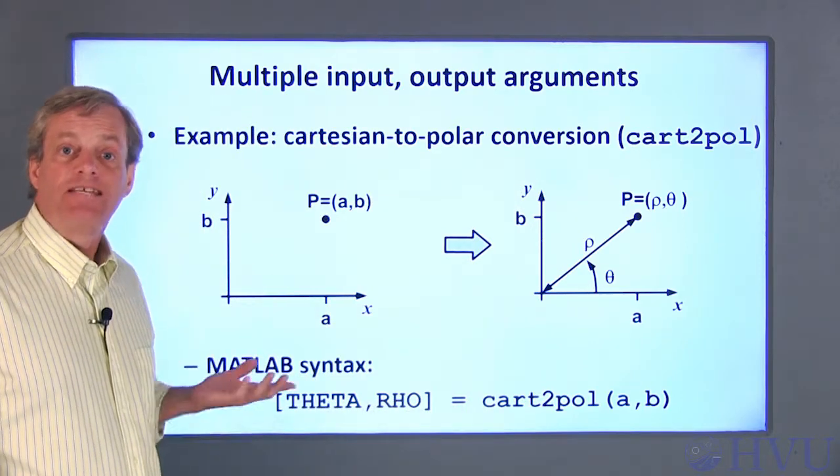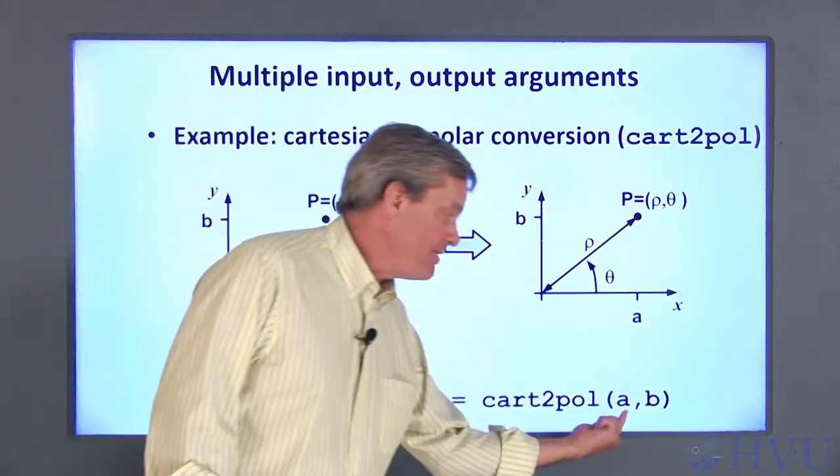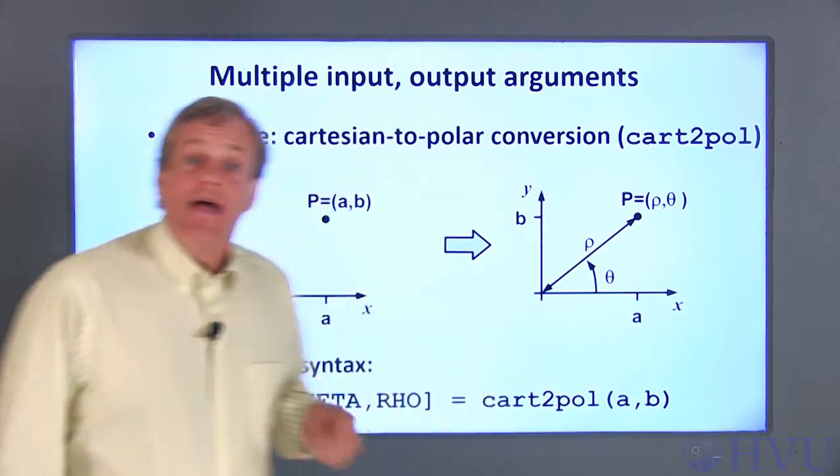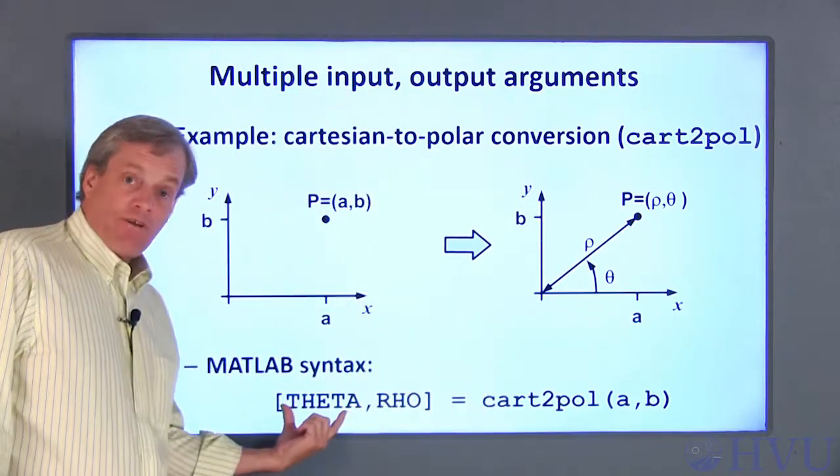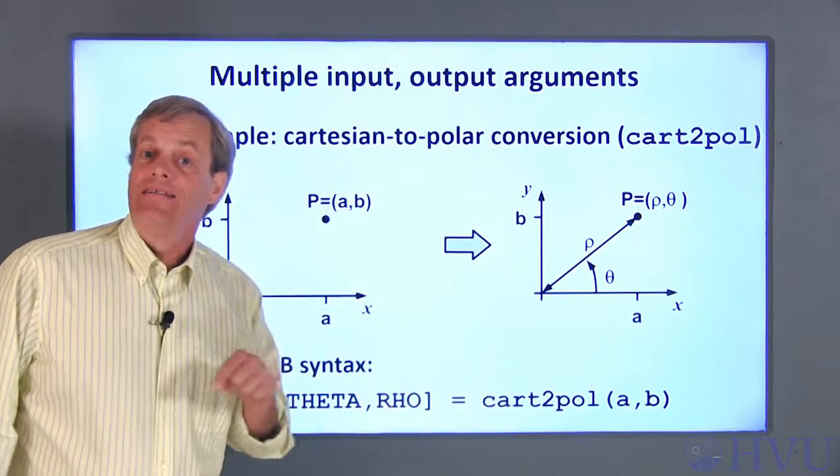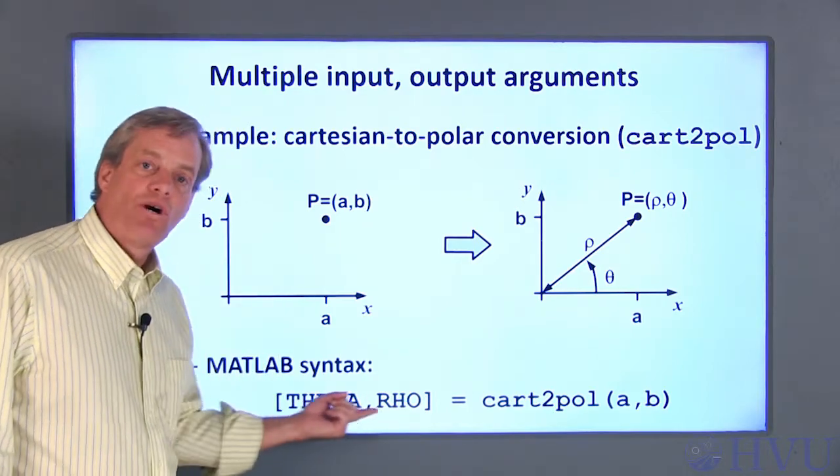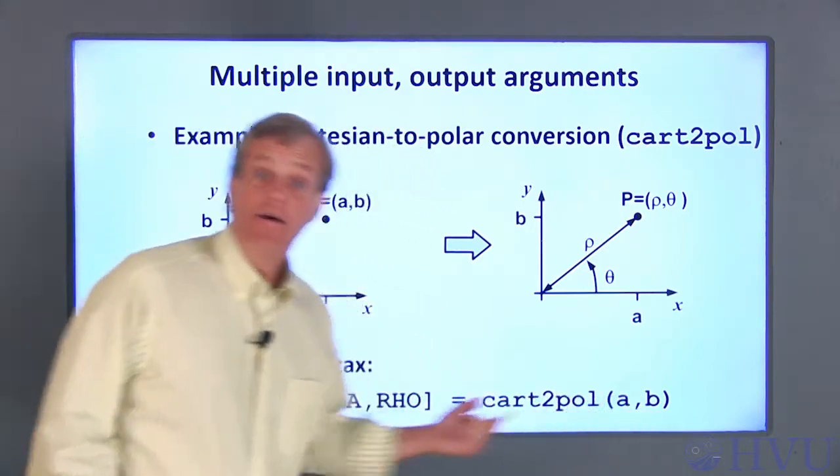The cart2pol command accepts as inputs the values of A and B in that order and returns the values of theta and rho in that order. Keep the order of the arguments in mind, they're important.